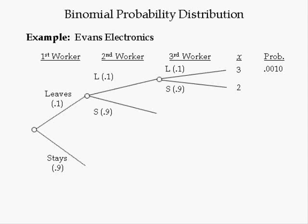If the first two workers leave but the third one stays, X equals 2. The probability of leave and leave and stay equals 0.1 times 0.1 times 0.9, which equals 0.009. Given the first worker leaves but the second person stays, if the first and third workers leave but the second stays, X is equal to 2. The probability of leave and stay and leave equals 0.1 times 0.9 times 0.1, which is equal to 0.0090.